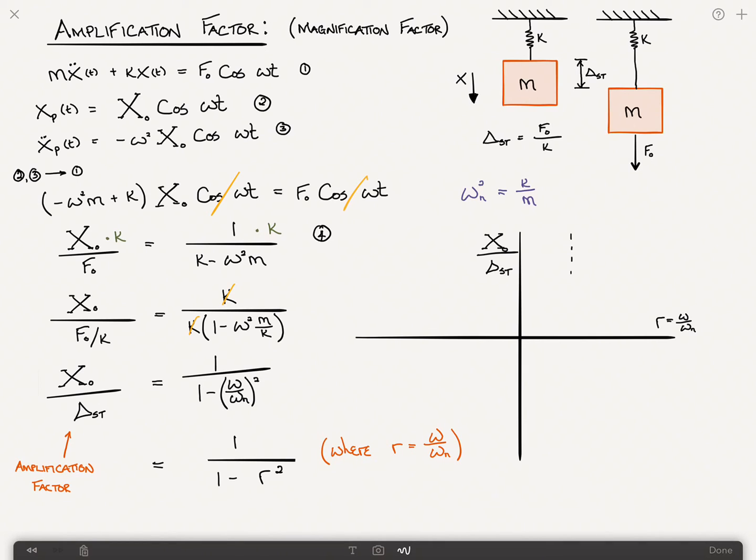And then you get a critical point here where it's r equals 1. So this is the case of resonance, right? Where omega is equal to omega n is on that dotted line.